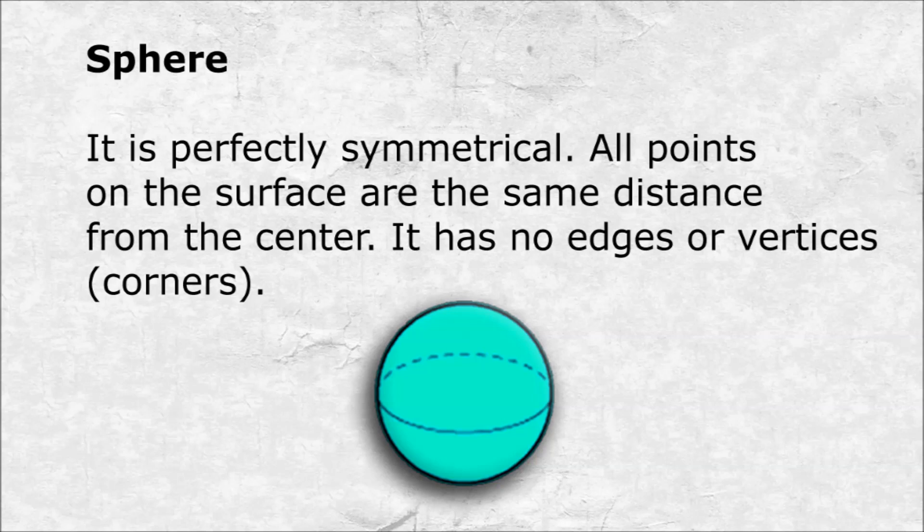Sphere. It is perfectly symmetrical. All points on the surface are the same distance from the center. It has no edges or vertices — no corners.